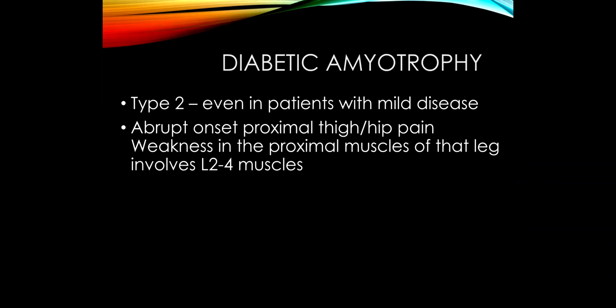A condition we haven't talked about — I thought about covering it during our radiculopathy lecture but felt it was too much information — is diabetic amyotrophy. These are usually type 2 diabetic patients, and often they just have a very mild diabetes. So that's against the rule of thumb where neurologic complications are usually correlated with severe hyperglycemia.